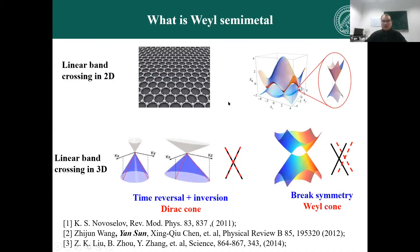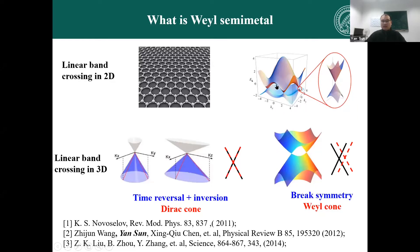First of all, let's have a short introduction about the Weyl semimetal method. We can understand it from the two-dimensional graphene. Graphene has a special band structure — it has a linear band crossing in two dimensions, and this linear band crossing is called the two-dimensional Dirac point. This kind of structure can also exist in three dimensions.